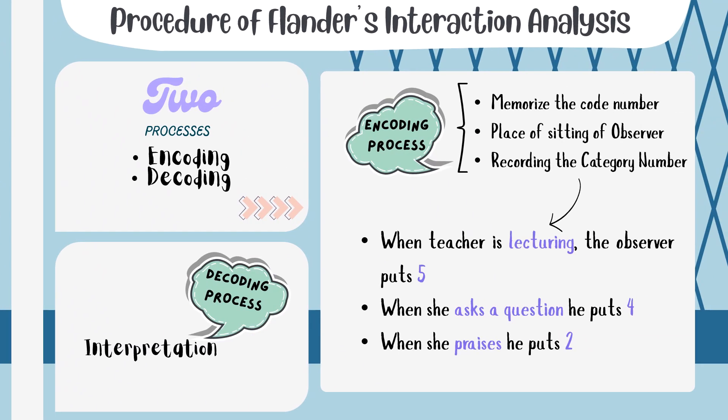Let's see the procedure of Flanders' Interaction Analysis. There are two processes: encoding and decoding. In the encoding process, the observer is present in the classroom. First, the observer memorizes the code numbers, then finds the right place to sit. The key step is recording the category number for each interaction. For example, when a teacher is lecturing, the observer writes 5; when she asks a question, he writes 4; when she praises, he writes 2. Likewise, he records all interactions that happen in the classroom. These three steps make up the encoding process.